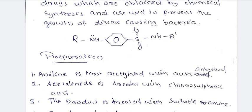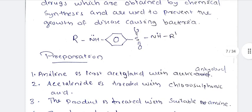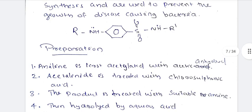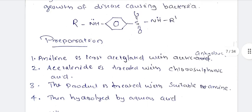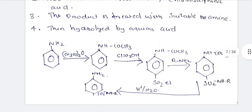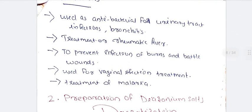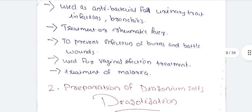We then treat with an amine (NH2). We reply here with NH2 in the para position. The last step is hydrolysis. The final step eliminates the protecting group to give us the sulfa drug product.